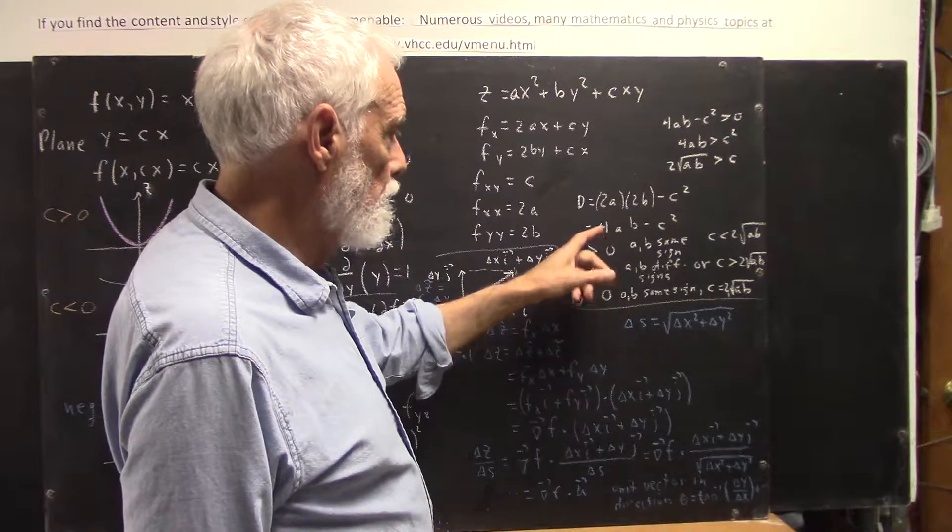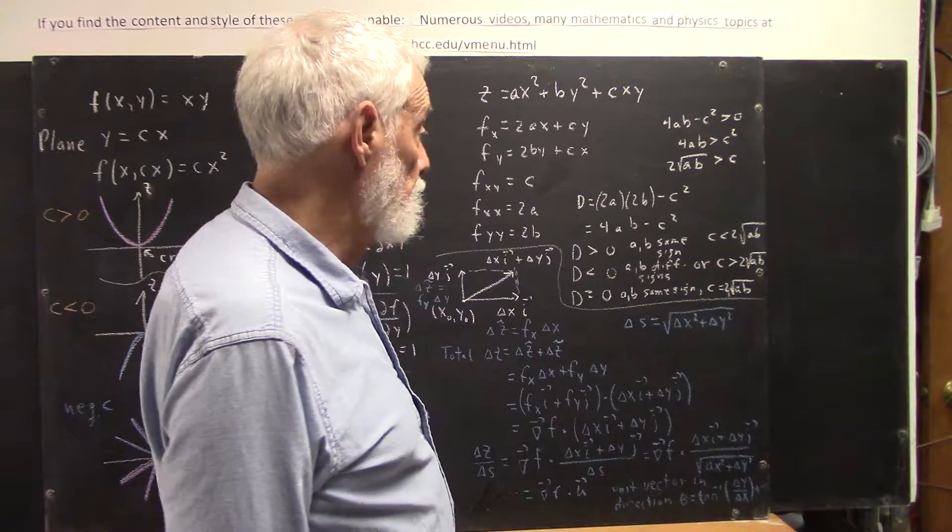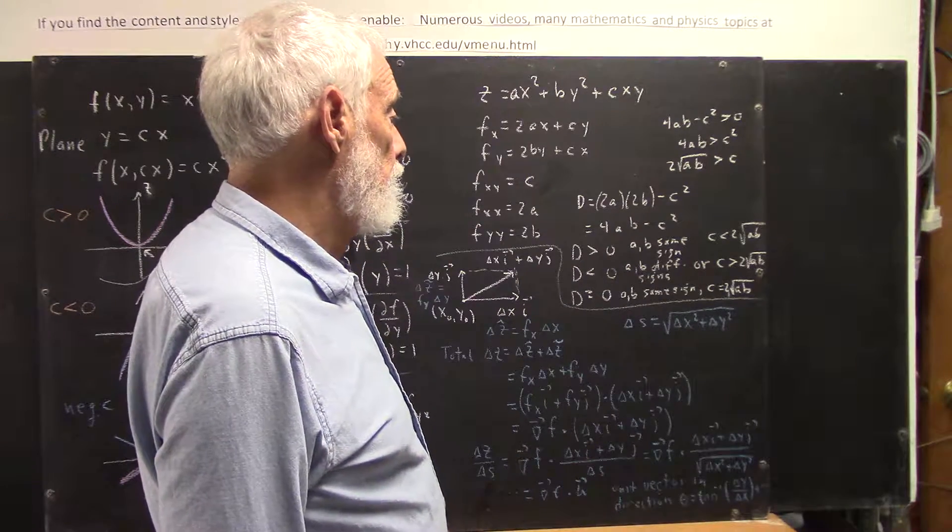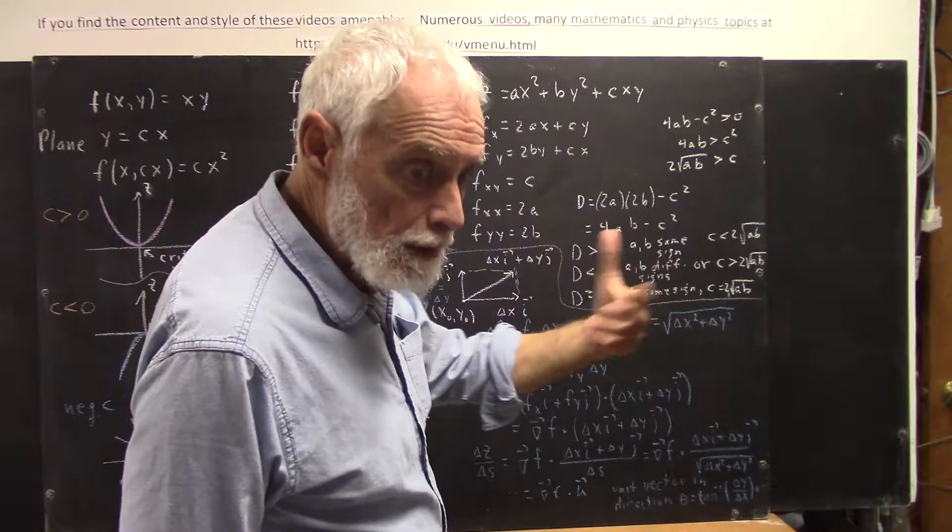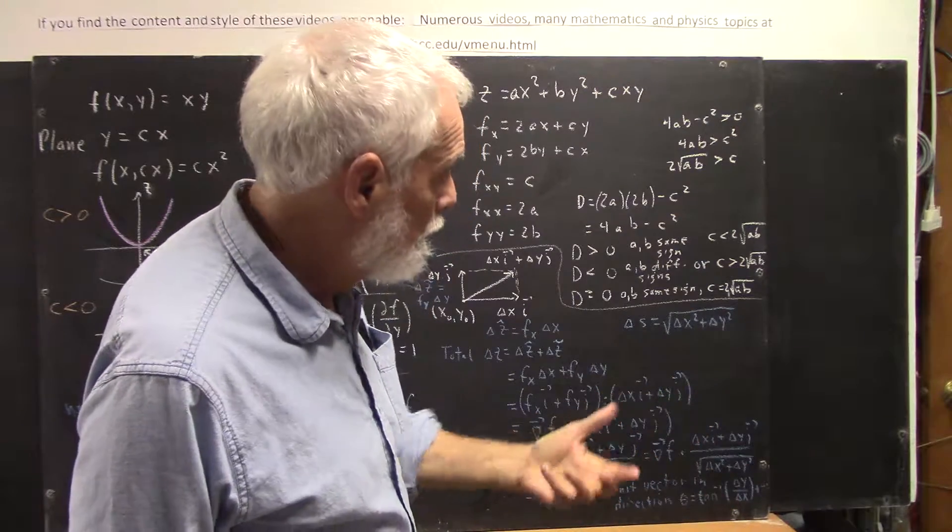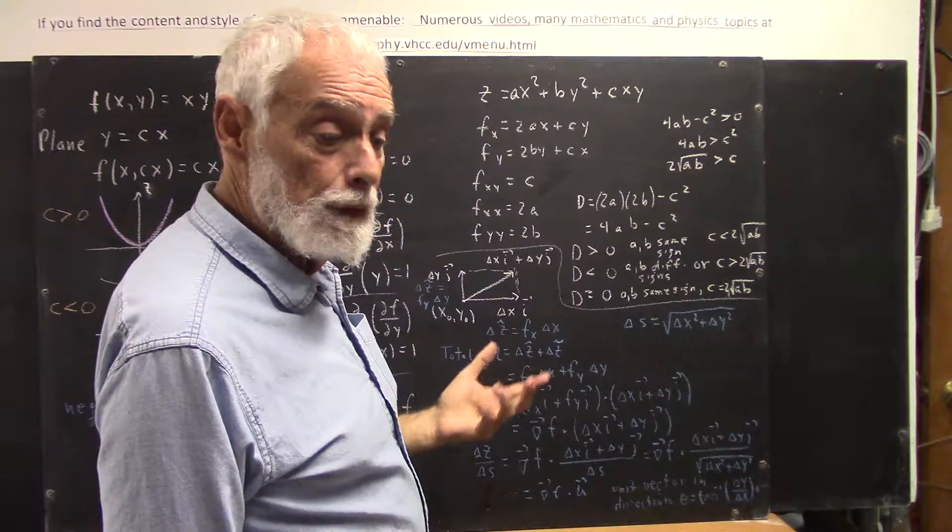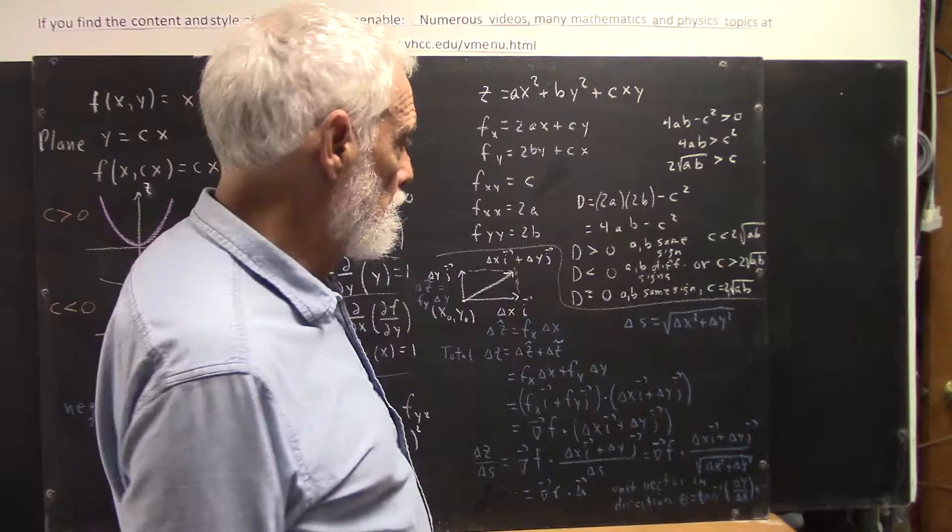Which is going to simplify to 4ab minus c squared. That looks kind of like the discriminant of a quadratic equation, except the letters are a little bit different.